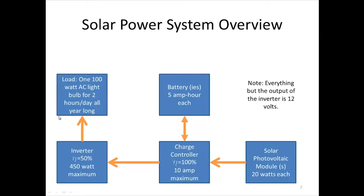The load is something like a light bulb, a fridge, or anything that uses electricity — you can think of anything you plug in at home. In this case it's going to be plugged into the solar power system. For this example we're going to use a 100-watt AC light bulb, and we're going to use it for two hours a day all year long.